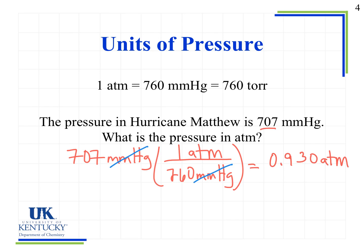This low pressure is typical in hurricanes — one way meteorologists evaluate hurricane category is by measuring the pressure inside the eye of the hurricane; the lower the pressure, the higher the category, along with factors like wind speed. Notice we have three significant figures in 707. The conversion factor 1 ATM equals 760 millimeters of mercury is an exact number, so it does not factor into determining significant figures.